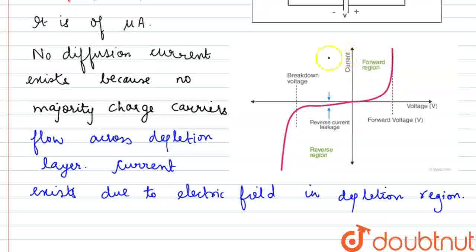This second diagram is the VI characteristics of the PN diode. Here in the reverse region, we can see that the current remains constant in this particular region up to the breakdown voltage. It is constant independent of the voltage.